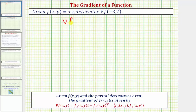The gradient of f is equal to the vector-valued function where the x component is equal to the partial of f with respect to x, and the y component is equal to the partial of f with respect to y.